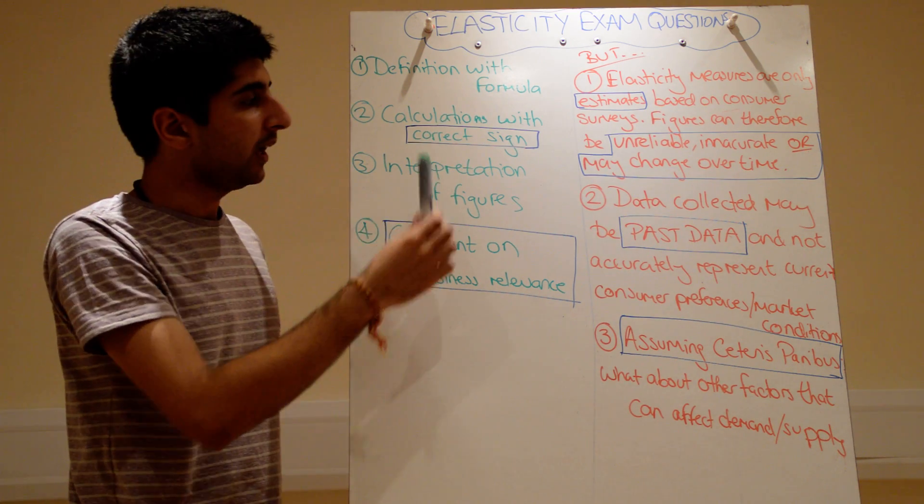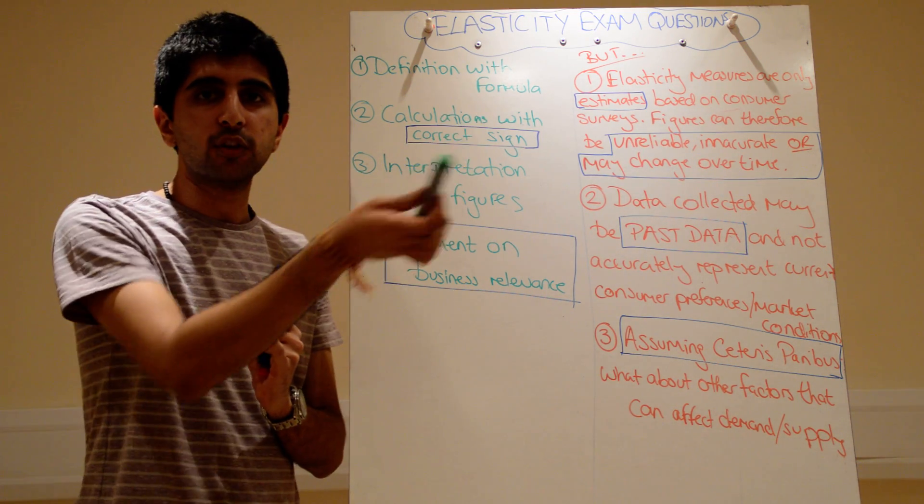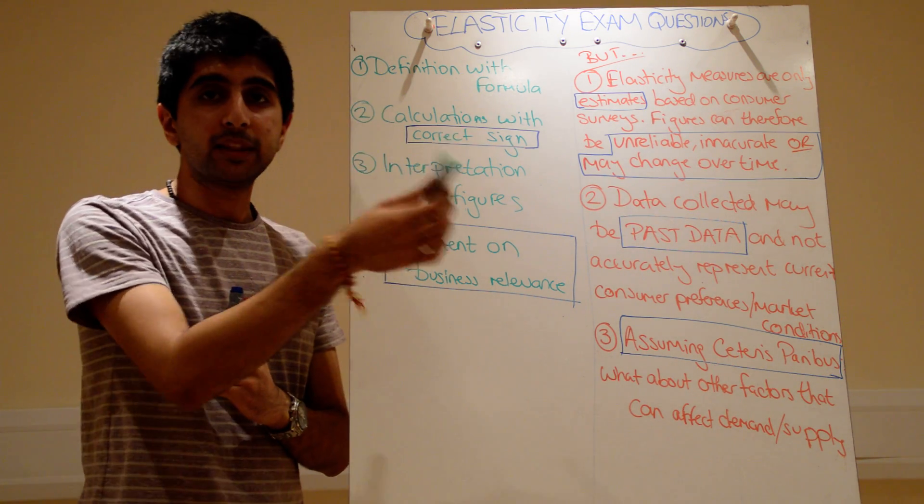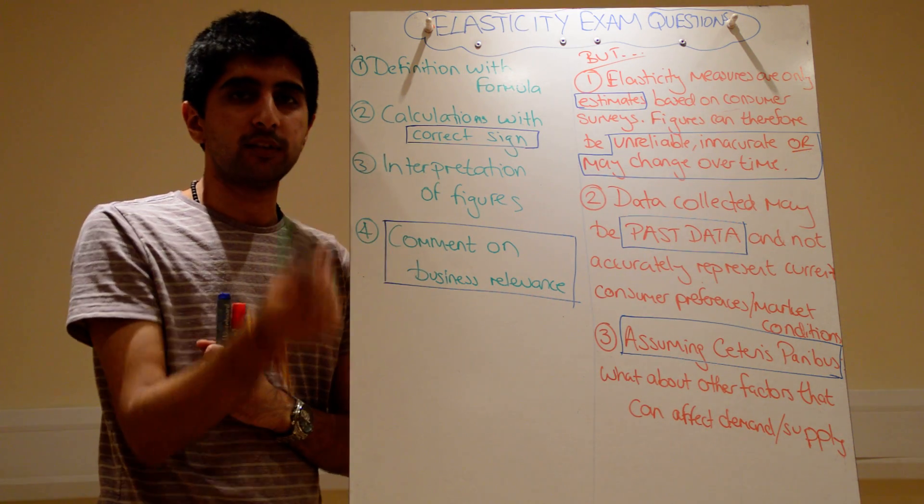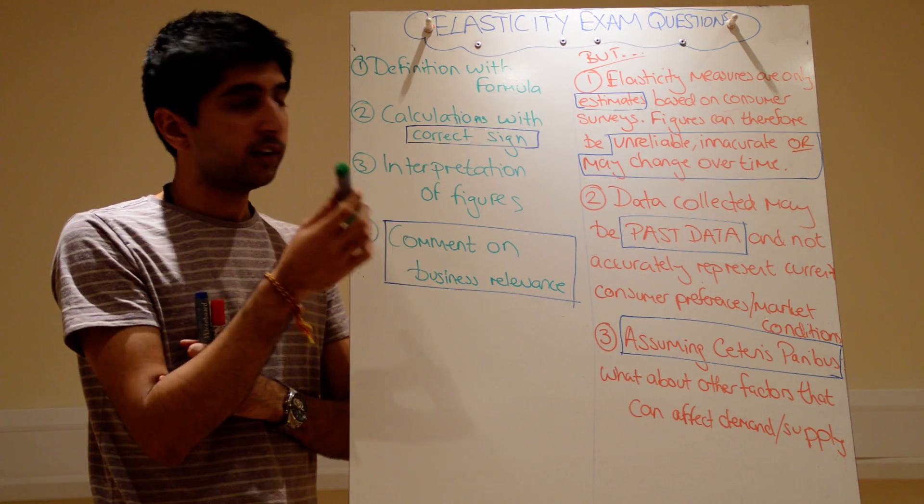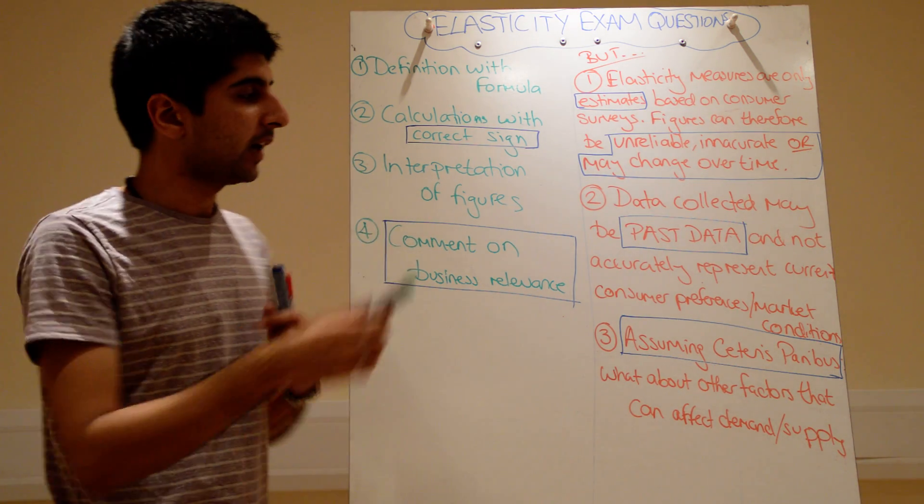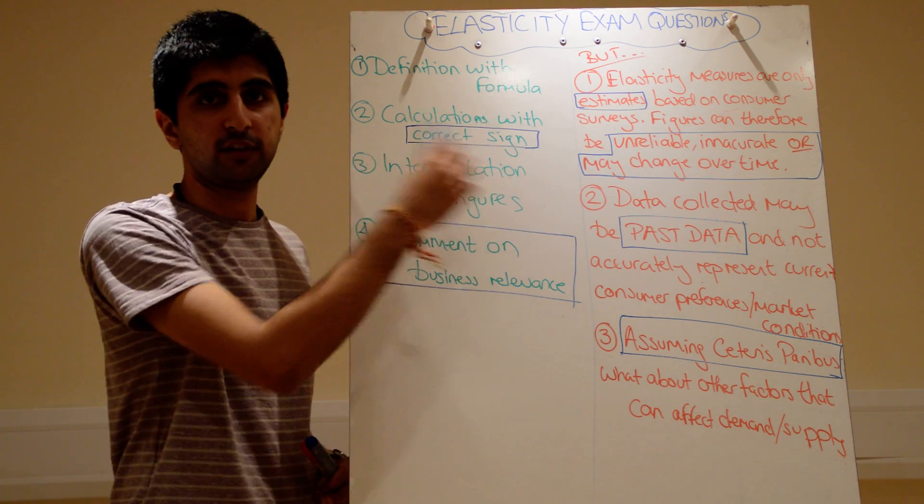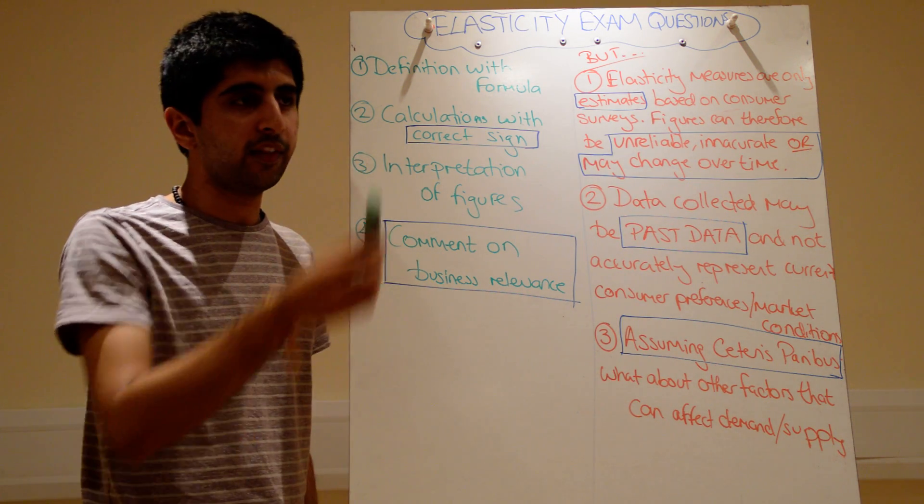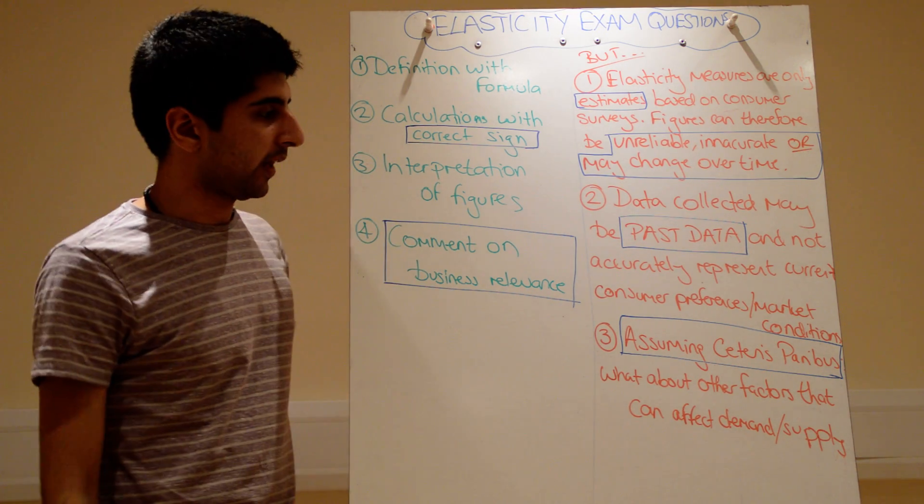Next once you have done that, interpret your figures. Talk about the figures that you generated. Are these figures elastic or inelastic? Do they change over time? Do they become more elastic or more inelastic? If we're talking about YED, does that make them normal goods? If they're normal goods, does it make them necessities? If we're talking about XED, do your figures make the goods compliments or substitutes? Does it tell you how closely related they are? Talk about all these key things. That goes into your interpretation of the figures. You've just got PED or PES. Whether the figures are elastic or inelastic is fine. And then what happens over time? From the first figure to the end, is there a little bit of a relationship going on there? Interpret your figures.